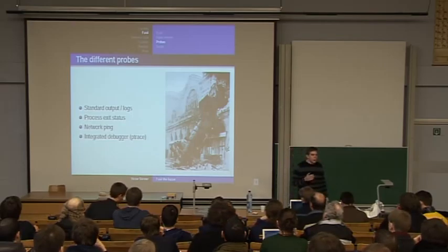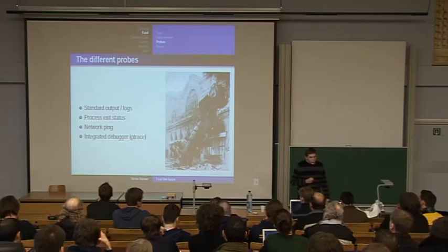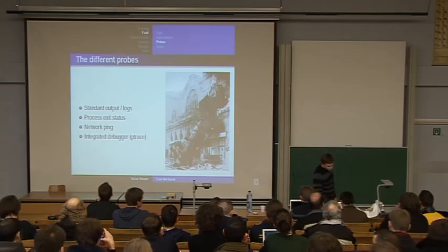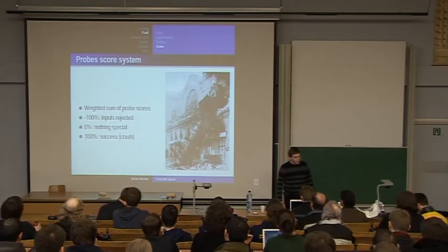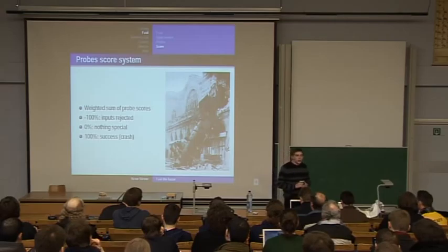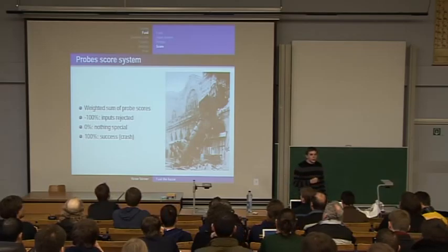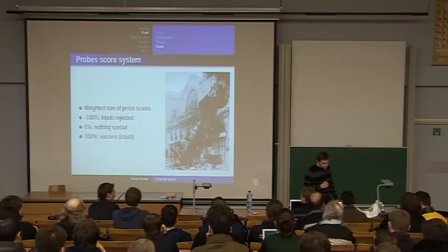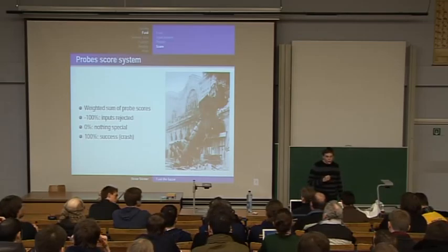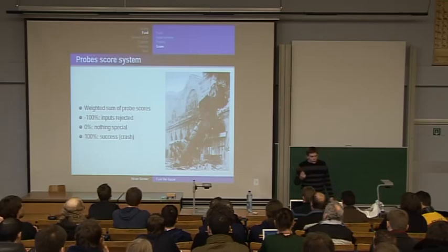Networking is used on remote servers to test if the server is still running or not. There is also an integrated debugger called Python ptrace. In Fusi, I use a score system, which means that each probe has a score. You do the sum of all probes, and you can give a weight to a probe — if you have a lot of false positives, you can use a lower weight. A score of minus 10% means input rejected, zero means nothing special, and a higher score means simply a crash.